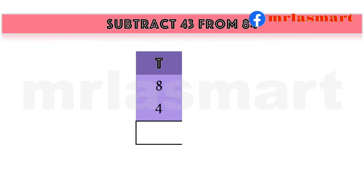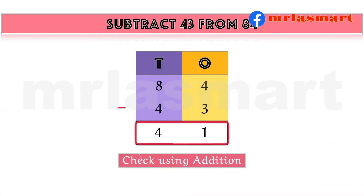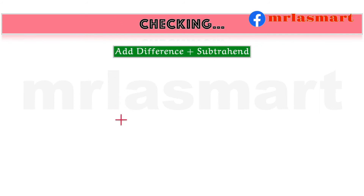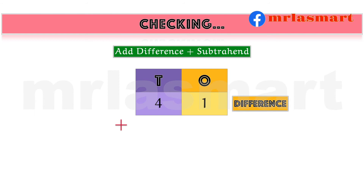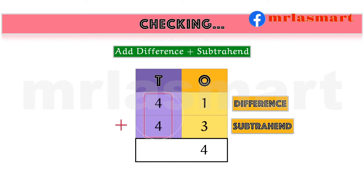Subtract 43 from 84. Check using addition. Add difference plus subtrahend. We get the minuend.